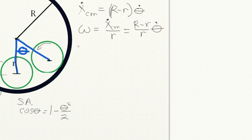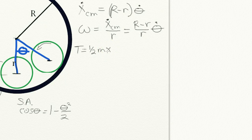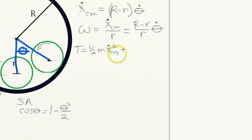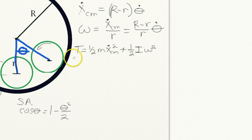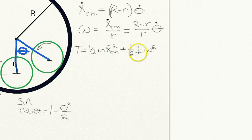Now we write the total kinetic energy T. It equals one-half times the mass times the center of mass velocity squared, plus the contribution from rotational energy, which is one-half times the moment of inertia I times omega squared. For a cylinder, I equals one-half m r squared. We substitute in the expressions we derived for velocity and omega.